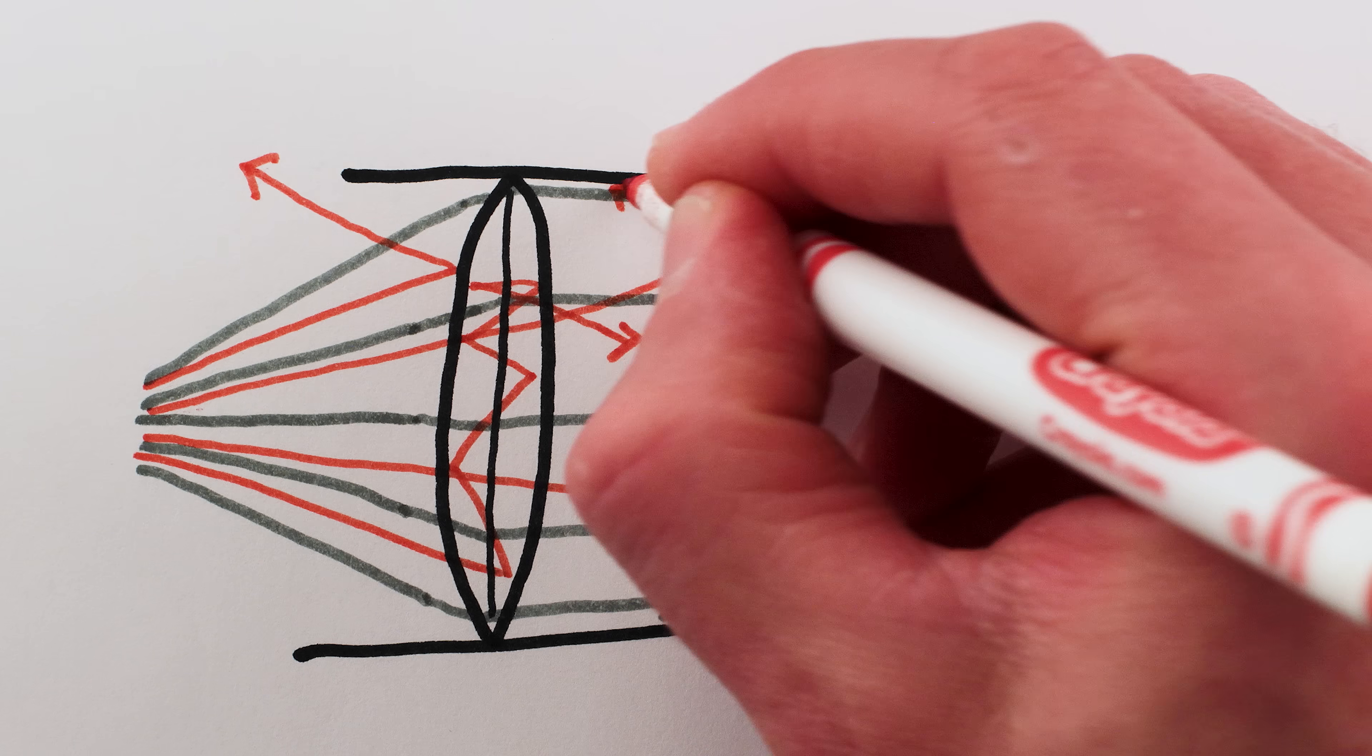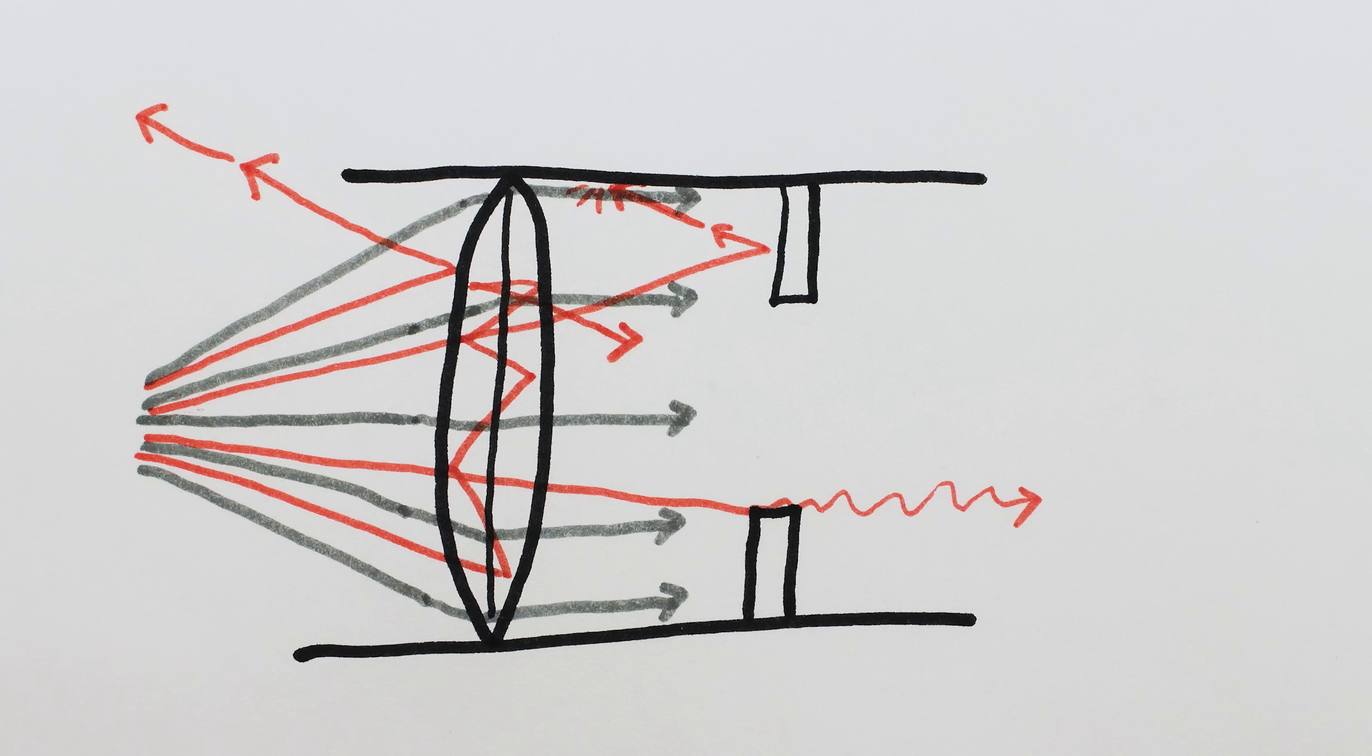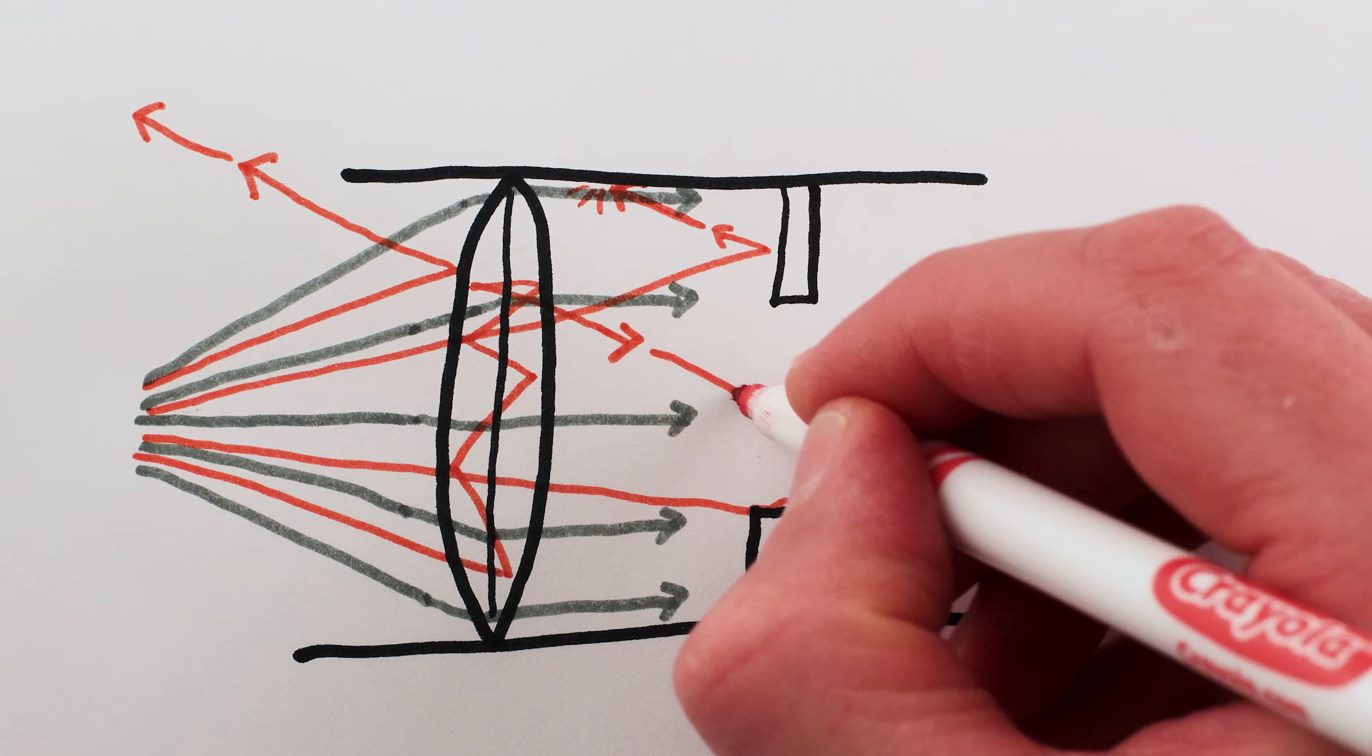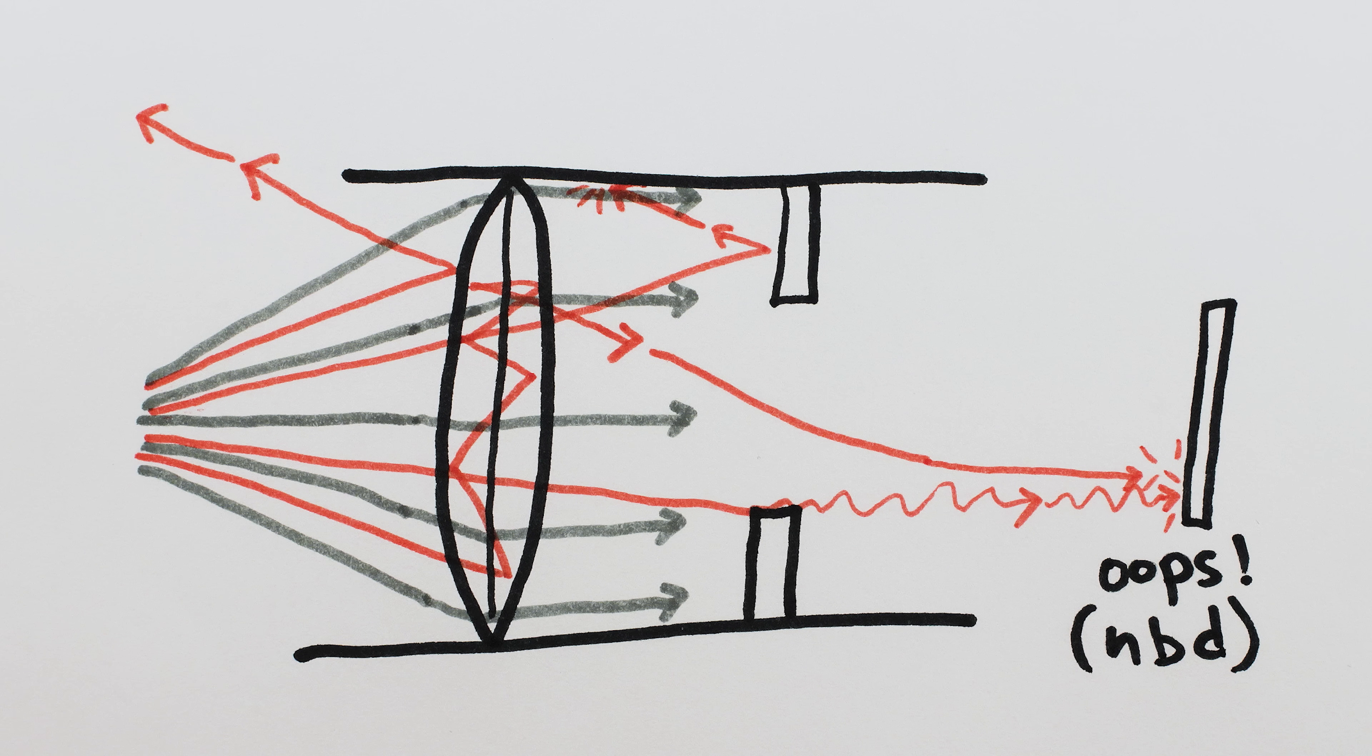And that light then bounces around in the lens before hitting the inside wall of the lens or going back out the front, or hitting the image sensor. But even when it hits the image sensor, you don't notice most of this incorrectly bouncing light, especially if the lens makers did their job well.